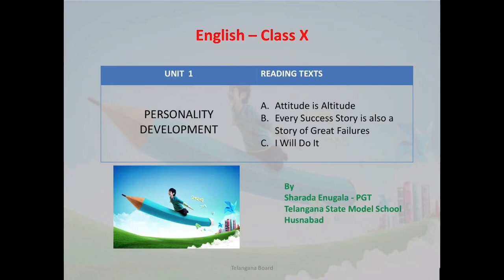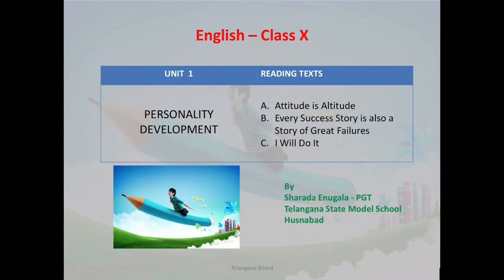First, let me explain the unit theme: personality development. As you can see in the face sheet of your textbook on page number 1, there is a picture — also visible in the slide. A boy is sitting over a pencil and flying high in the sky like a bird, meaning he is developing himself in all areas. Not only in education, but a person needs all-round development to become a good citizen. This all-round development is called personality development.